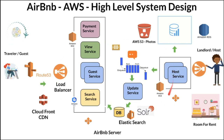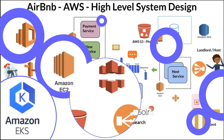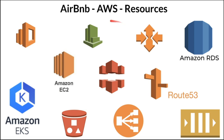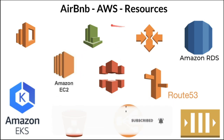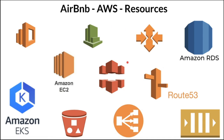In this slide we are going to see what are the different types of AWS resources used in the current system design: Elasticsearch, Kubernetes, EC2, S3 bucket, load balancer, SQS, Route 53, Amazon RDS, Auto Scaling Group, CloudFront, and CloudWatch. I have used a relatively small number of resources in the current design because it's a high level. It is possible to use more resources, but for high-level design I would like to stick with these.